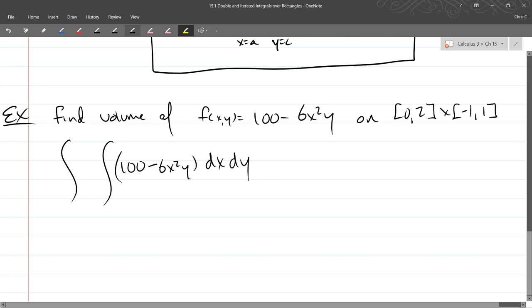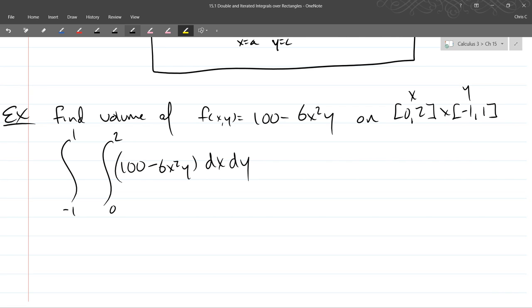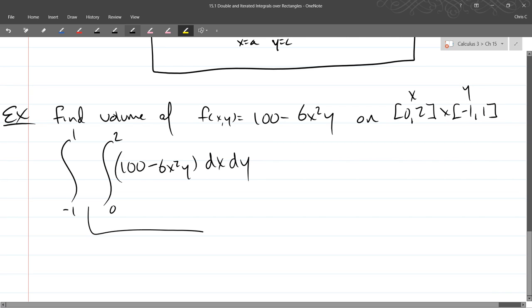So I'm going to 100 minus 6x squared y. I'm going to go alphabetical dx dy. So that dictates, I have my x's first, my y's second. So my x goes 0 to 2, my y's negative 1 to 1. So you don't have to keep writing x equals y equals everywhere. You should know that in here, that's all x's. So I'm not writing x equals 0, x equals 2 on these. You just know it's a dx integral, so we're doing x's.